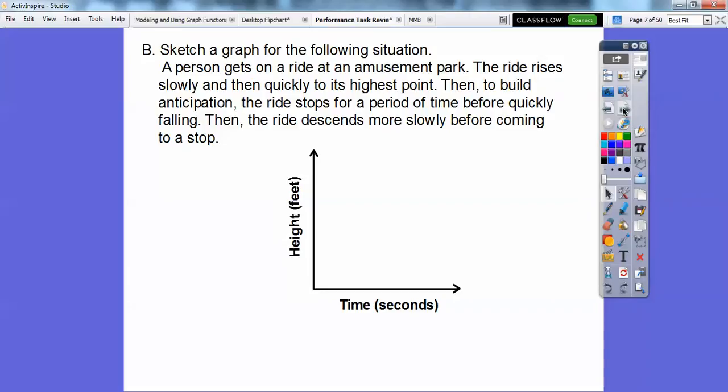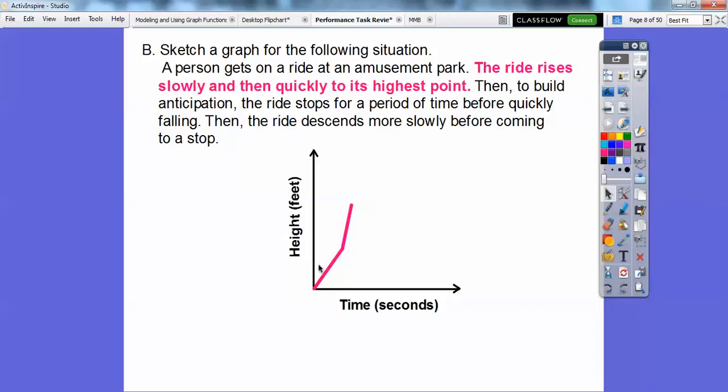Okay, so let's try that with this one. A person gets a ride at an amusement park. The ride rises slowly and then quickly to its highest point. Okay, so let's do that part right there. So it rises slowly. I don't know, whatever steepness this is, and then quickly, just make this one steeper right here. So here's the time right here. As time goes, the steeper it is, the faster they're going right there.